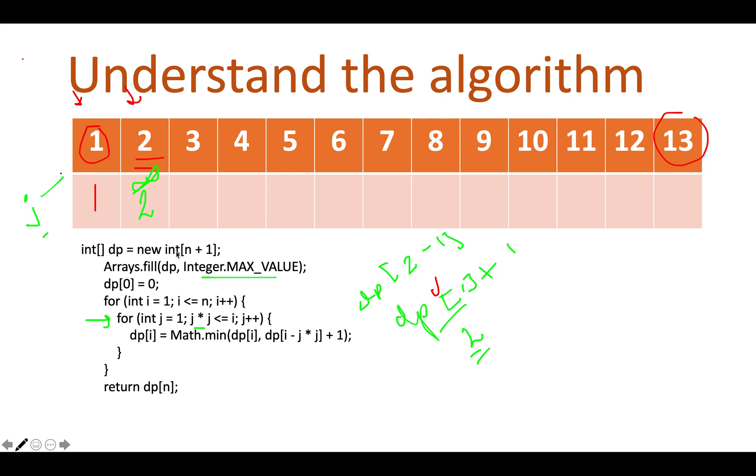Let's move on for the next iteration which is three. So i now points to three and let's start the iteration for all the possibilities of j starting from one. So let me just change the color of pen. Now j becomes one and the initial value that is stored here is infinity for j equals to one. One square is less than equal to three. That's correct.